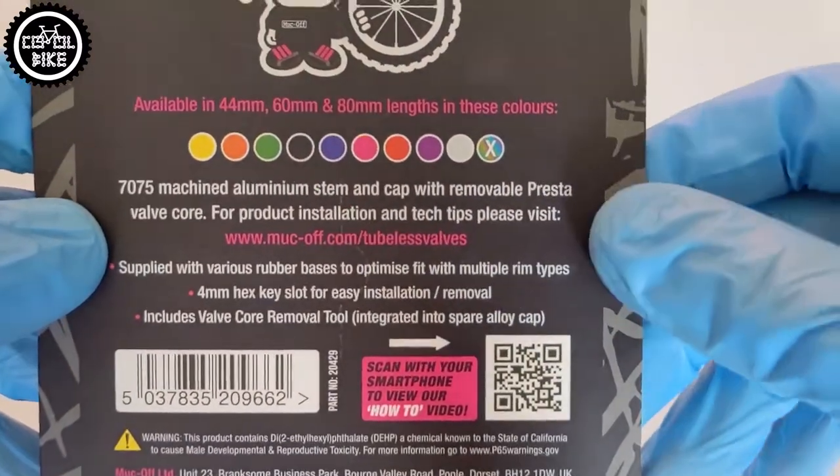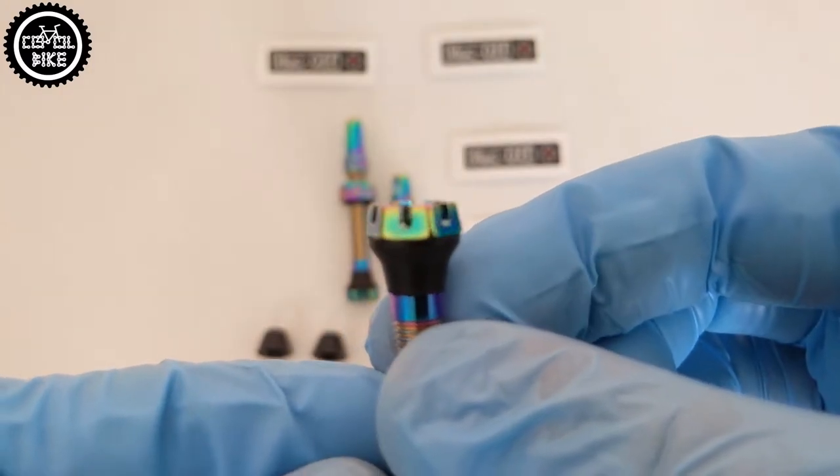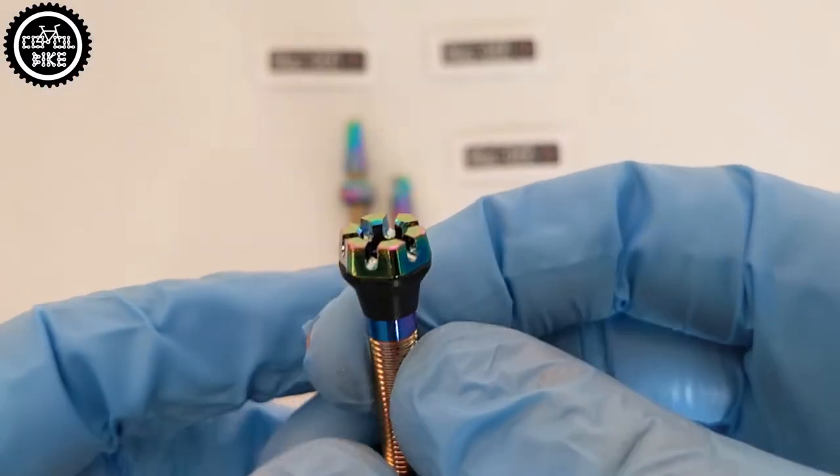And if you are wondering what distinguishes Makovs from the rest? Well, six slots at the end of the valve for better airflow is a handy feature when somebody uses tire inserts.